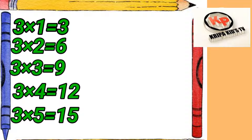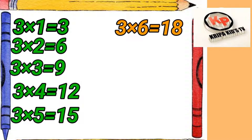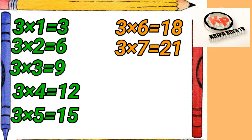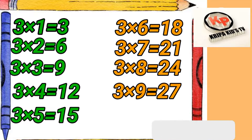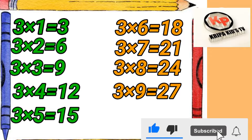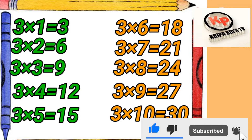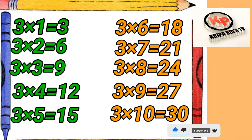3 times 5 equals 15. 3 times 6 equals 18. 3 times 7 equals 21. 3 times 8 equals 24. 3 times 9 equals 27. 3 times 10 equals 30.